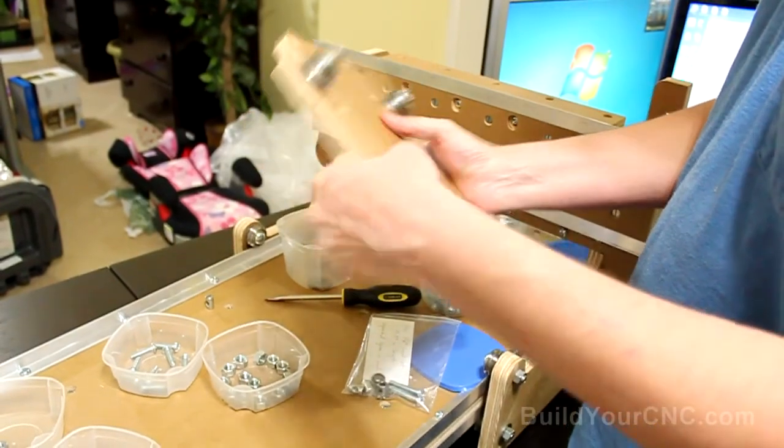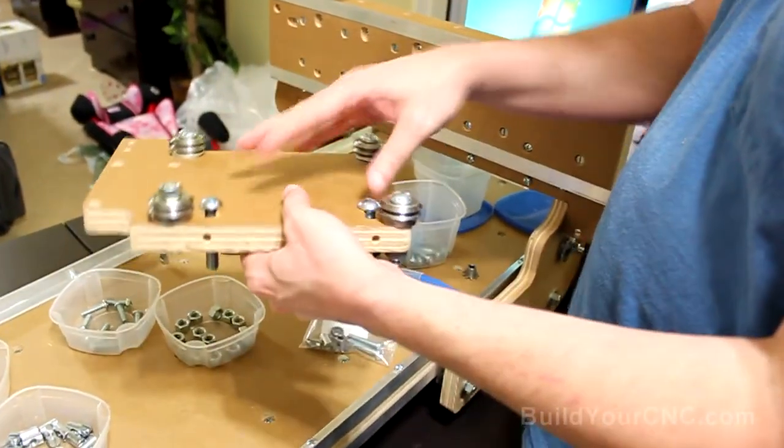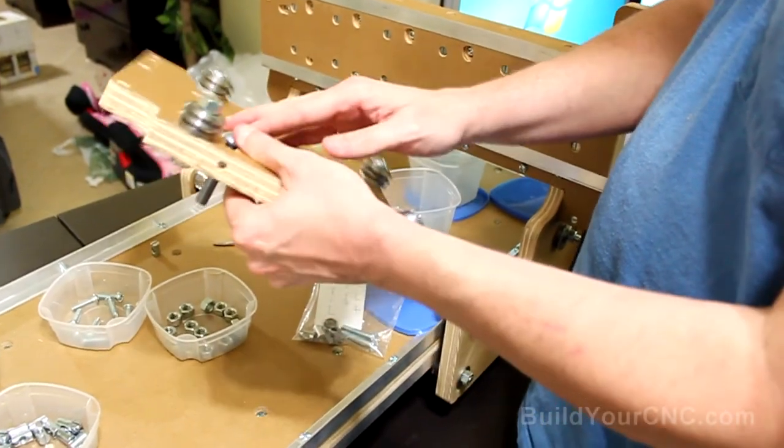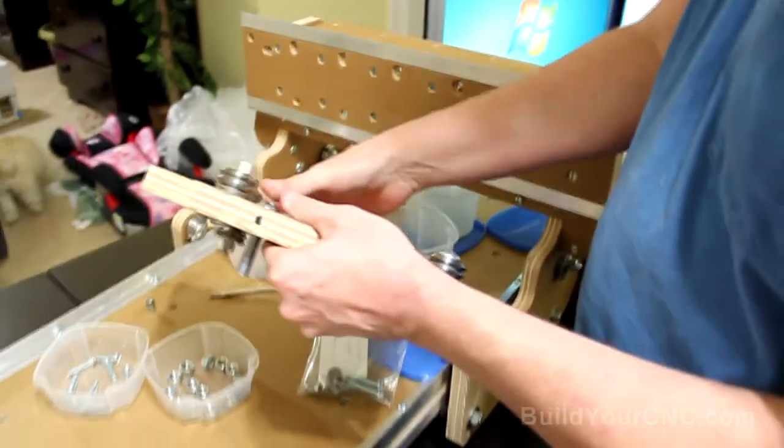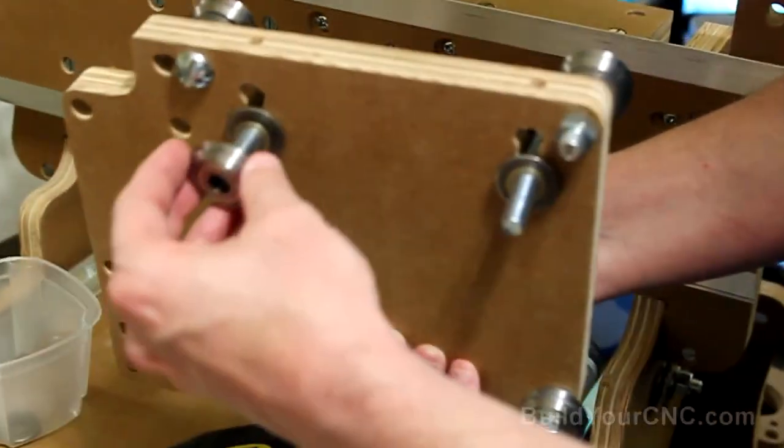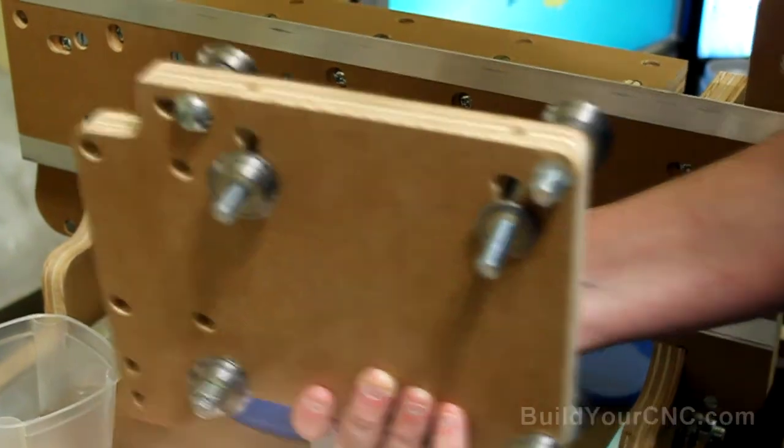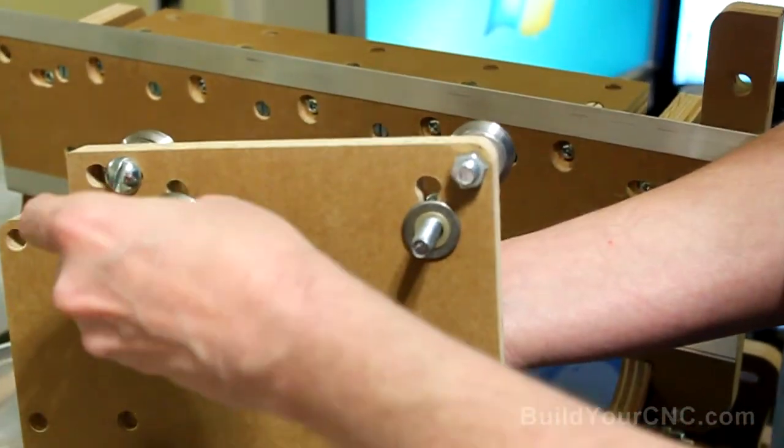And then now we have to do the Z axis bearings on this side. So we'll go ahead and put these in. And we're not going to put in a washer here because it would add too much space and it may rub against our rail. So we'll forgo those. We will put one on this side. Thin washer. These are the last bearings. And these screws are one and three-quarter inches long.